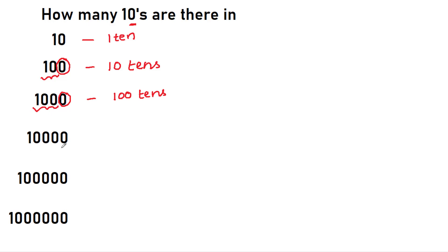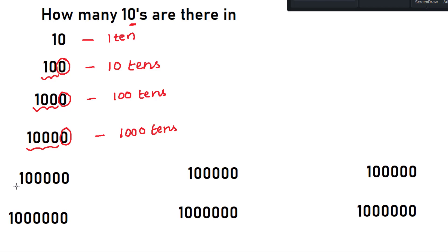How many tens are there in 10,000? You just leave this zero and see what is the number before this — that is 1000. So we are having 1000 tens. Now this number has six digits. Here comes the Indian number system and international number system — based on the number system, you will change the commas. But whatever the number system is, if you want to find how many tens this number has, just leave the last zero and consider what is the number before that. It has 10,000 tens.